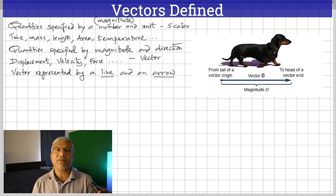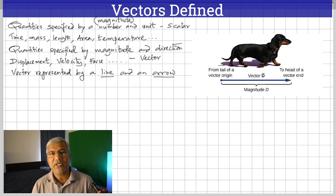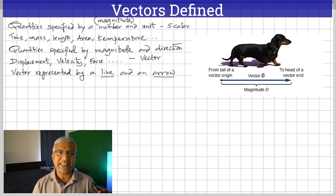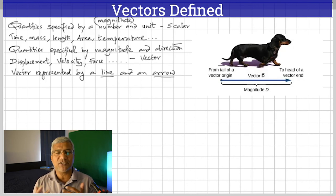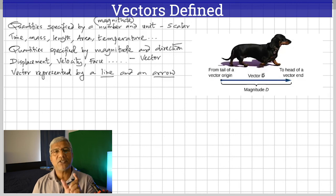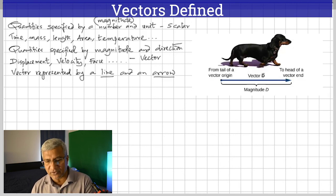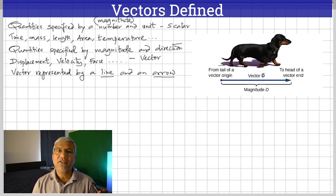I've given some examples of scalar quantities: time, mass, length, area, temperature, etc. But quantities that are specified by both magnitude and direction — you need both — these quantities are vectors.